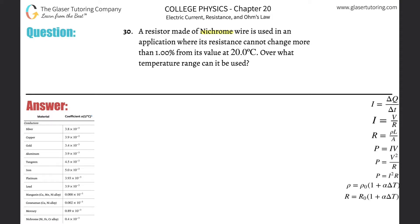Problem 30: a resistor made of nichrome wire is used in an application where its resistance cannot change more than 1% from its value at 20 degrees Celsius. Over what temperature range can it be used? First, note that I explain this concept in detail in number 29. As the temperature of a material changes, the resistance to current flow also changes — it increases. It's a basic linear relationship. So I'm going to list out my variables. We're dealing with nichrome.